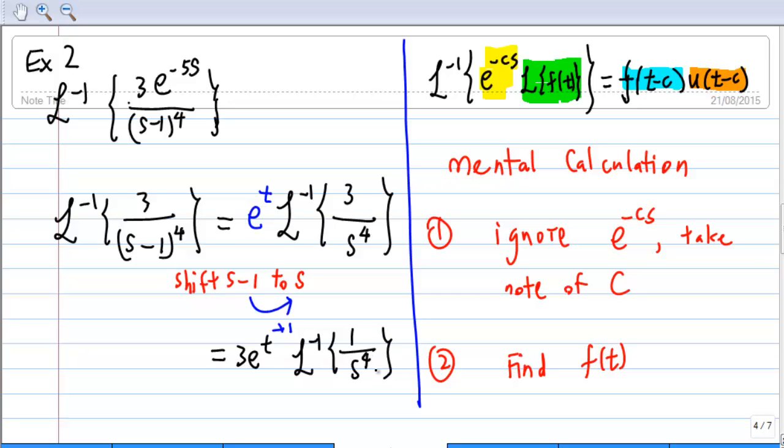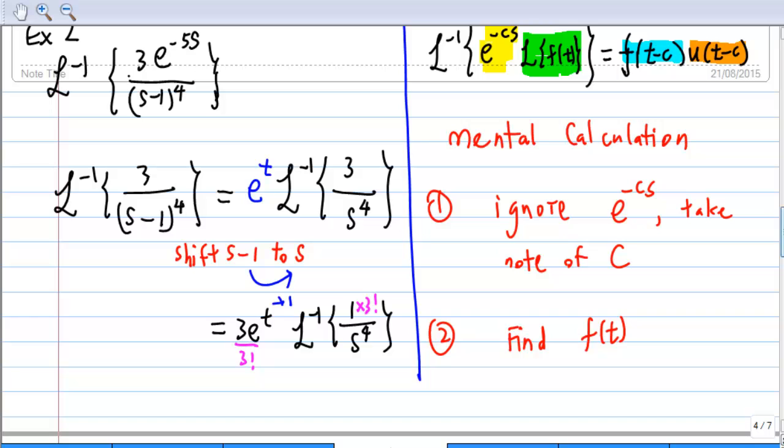In order to balance this, I must multiply by 3 factorial and then divide by 3 factorial again. Since 3 factorial is equal to 6, so 3 over 6 is 1/2 e power t inverse Laplace transform of 3 factorial over s power 4.